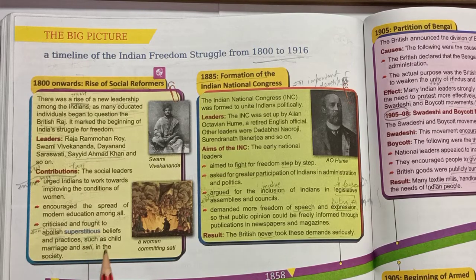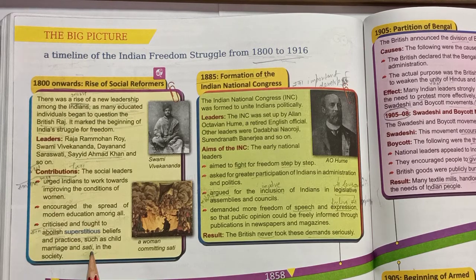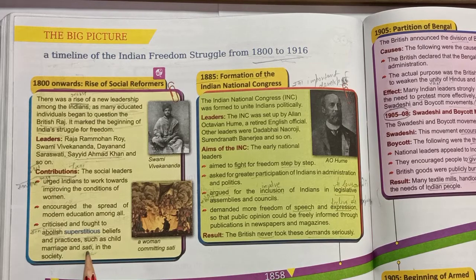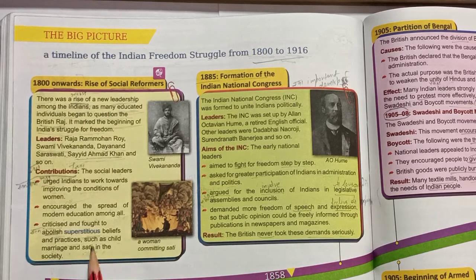Sati-pratha was a practice where, when a husband died, his wife would be killed alongside him. She was not allowed to remarry. After the husband's death, sati-pratha was carried out and the wife was killed. Child marriage involved marrying children at a very young age. So the reformers started working against these from 1800 onwards.